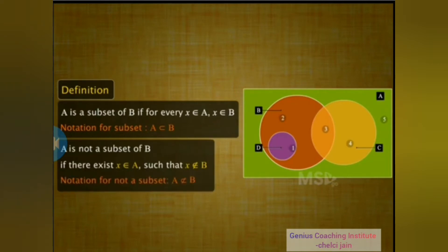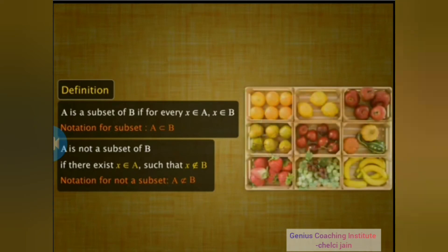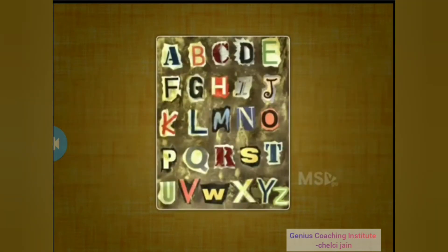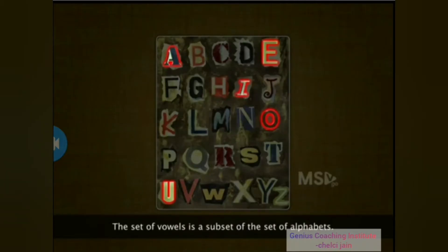Symbolically, A is not a subset of B is denoted as shown here. We can say that in the fruits section of a supermarket, the set of apples is a subset of the set of fruits. Similarly, in the English language, the set of vowels is a subset of the set of alphabets.